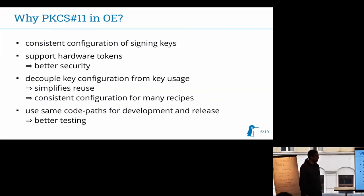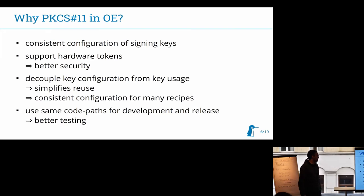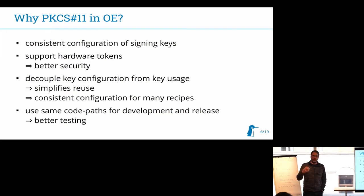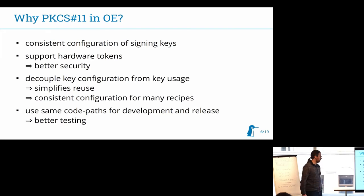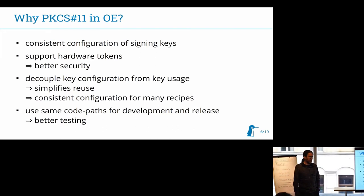By now it should be clear that when we want to use HSMs in OE for signing, we also want to do this via PKCS11, because it's the de facto standard. We want better security and want to decouple the usage from the configuration, because it should just work if I clone a repository. In a different environment where I want to make a release — for example in some disconnected room where only a few people have access — I want to change a few things, especially the key configuration, and do another build to get the actual release result.